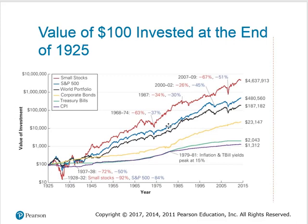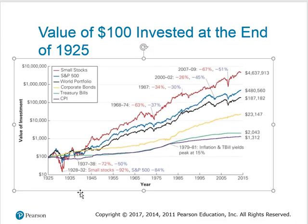If you look at the very bottom line on the graph — CPI, the consumer price index, that's inflation — $100 in 1925 in today's money would be $1,312. Said slightly differently, $1,312 today will buy what $100 bought in 1925. So what is the rate of return on these investments?